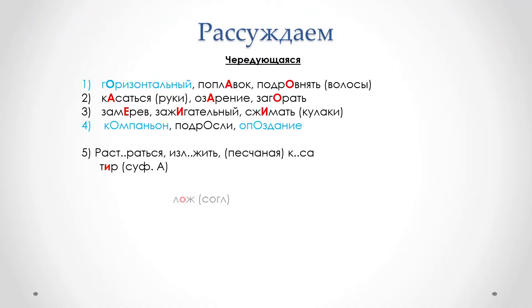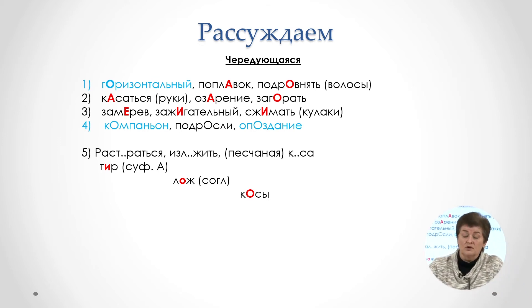Последняя строка тоже содержит ловушку. Чередующийся корень «тир» — его правописание зависит от суффикса «а». Слово «изложить»: правописание корня «лож» зависит от согласной «ж». А вот слово «коса» в значении «песчаная коса» имеет проверочное слово «косы» и не зависит от суффикса «а», как происходит с чередующимися корнями «кос». Таким образом, ответы «2» и «3» являются верными.